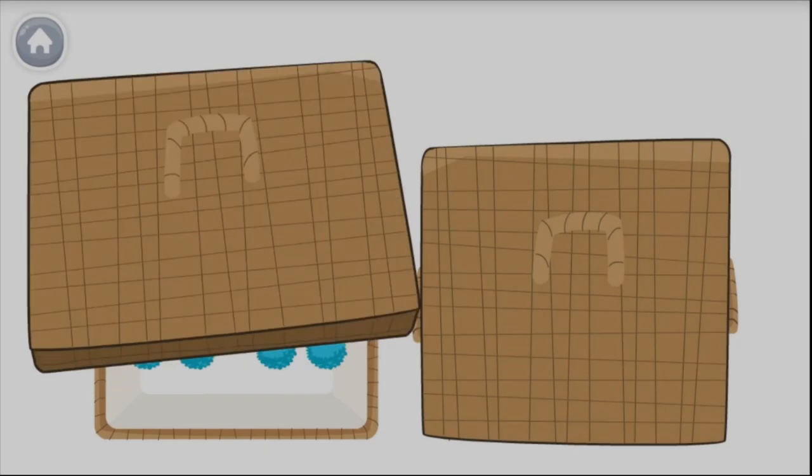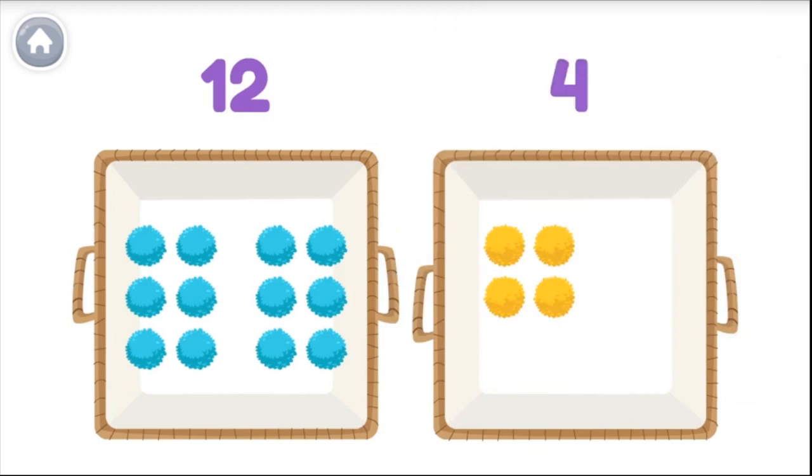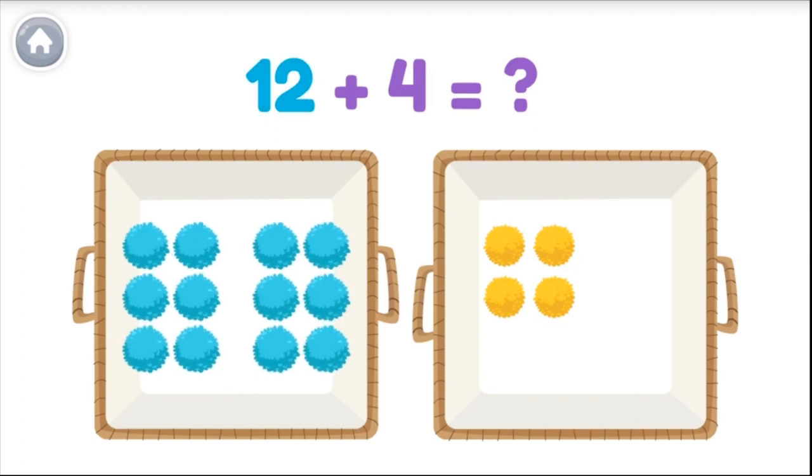There are twelve blue pom-poms in this container and four yellow ones in this container. How many pom-poms are there all together? Twelve plus four is sixteen.